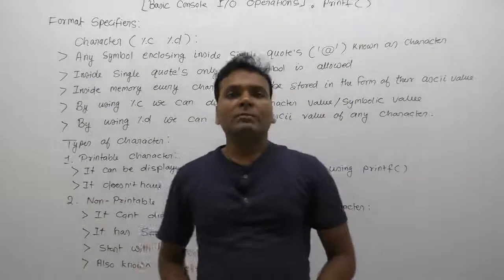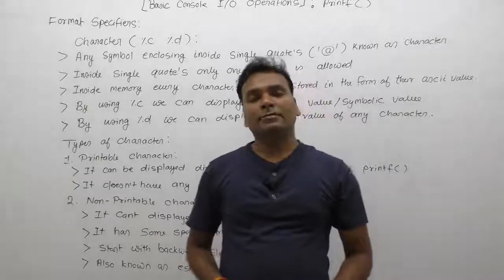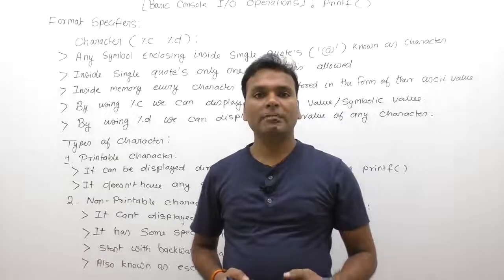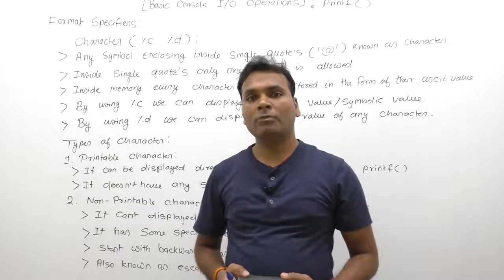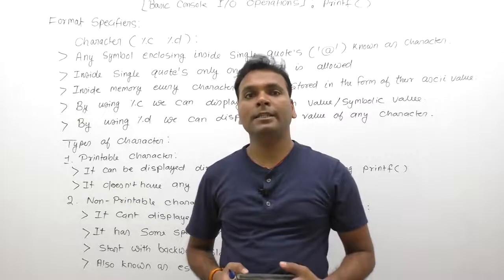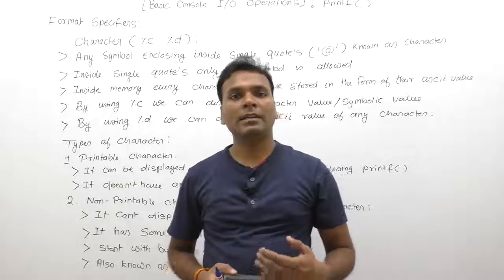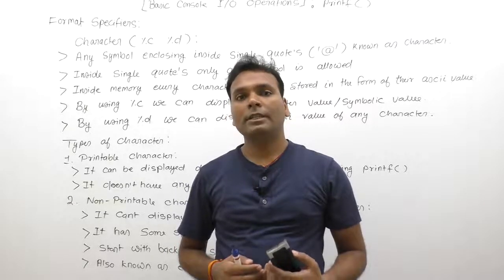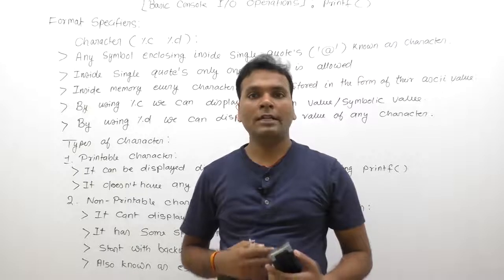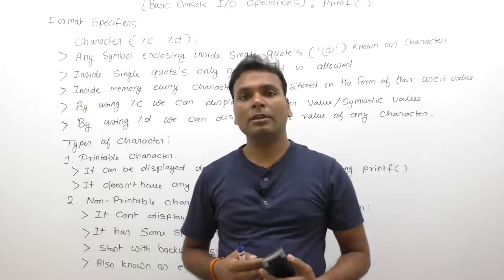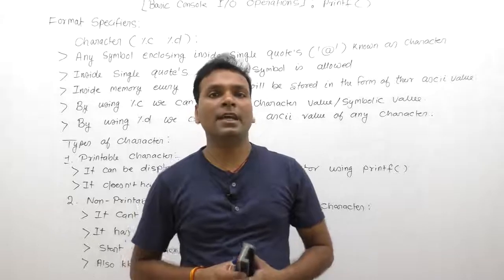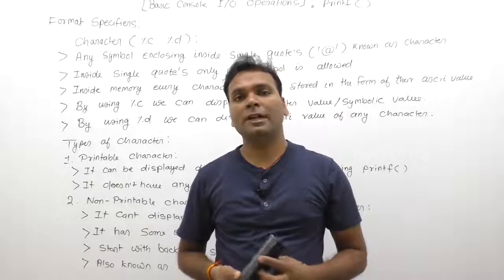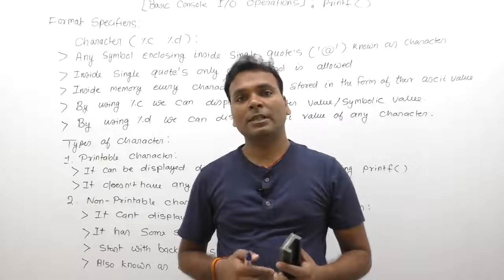Next property of printf function: displaying characters. Using the printf function, we can display any character with the help of format specifiers. Percent c is used for character display. As we know, characters are represented inside memory in the form of their ASCII value, so we can display either the character value or its ASCII value. Character value is displayed using percent c and ASCII value using percent d.